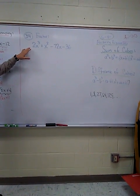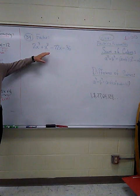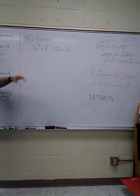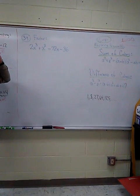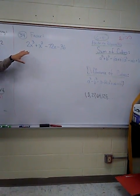This is a problem from the algebra class. It says factor 2x cubed plus x squared minus 72x minus 36. And here you have four terms, a cubic polynomial, so you probably want to try factoring by grouping.